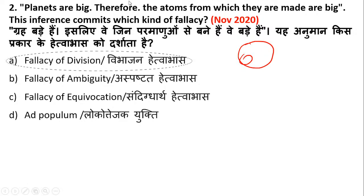For example, if I say that India's favorite sport is cricket, and Harish is Indian, therefore his favorite sport is cricket — this is a wrong statement. Because there are more than 135 crore people in India, it is not necessary that every person's favorite sport is cricket. This is the fallacy of division: if the country's favorite sport is cricket, we don't assume that every individual shares that.